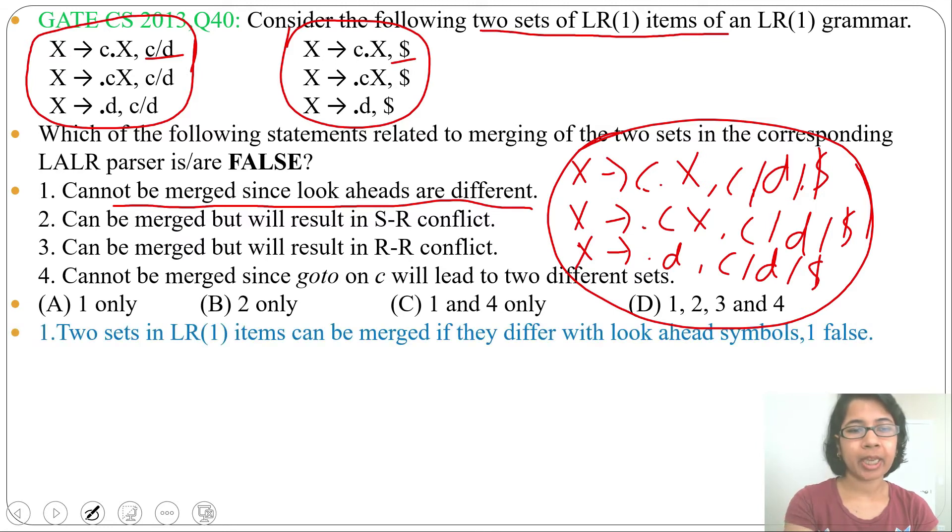Next, check statement 2: can be merged but will result in shift-reduce conflict. There is a chance of conflict if there is a reduction. There are two types of conflict: one is SR conflict, another is RR conflict. If there is a reduction, then there is a chance of conflict.